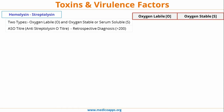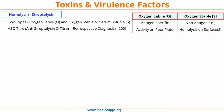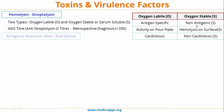Let's look at the differences between oxygen-labile and oxygen-stable hemolysin. Oxygen-labile is antigenic; oxygen-stable is non-antigenic. Oxygen-labile shows activity on the pour plate; oxygen-stable shows hemolysis on the surface. Oxygen-labile is cardiotoxic; oxygen-stable is non-cardiotoxic. A simple way to remember: 'stable is safe' — non-cardiotoxic (S = safe), non-antigenic (S = safe), and hemolysis seen on the surface (S). The letter S helps remember all three features of oxygen-stable.